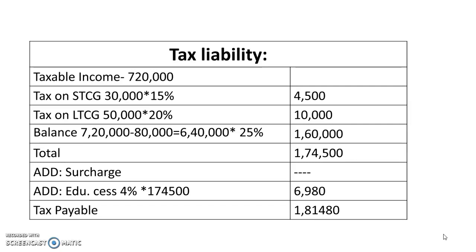For tax liability, take taxable income of 7 lakh 42,000. Short-term capital gain tax at 15% on 30,000 gives 4,500. Long-term capital gain tax at 20% on 50,000 gives 10,000. Balance: 7 lakh 42,000 minus 80,000 already taxed leaves 6 lakh 40,000; apply 25% company tax rate giving 1 lakh 60,000. Total tax is 1 lakh 74,500. Surcharge is nil. Education cess at 4% gives 6,980. Total tax payable is 1 lakh 81,480.